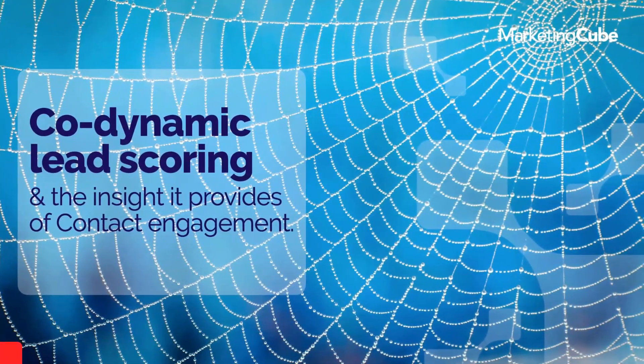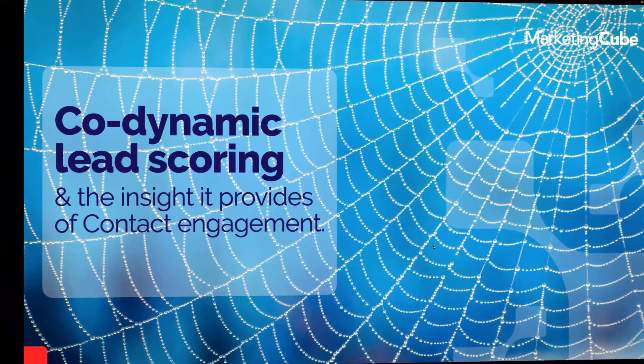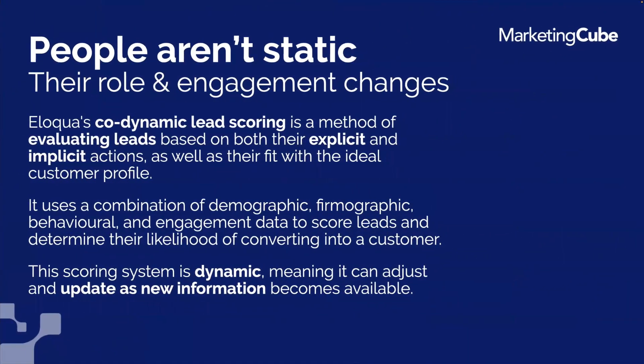Co-dynamic lead scoring — what does that really mean? There are many ways lead scoring is presented, and Eloqua was one of the first to really provide a lead scoring construct. It's much more than simply accumulating points for certain types of behavior. The 'co' refers to both profile and engagement information — those are the two things — and 'dynamic' means the score actually goes up and down.